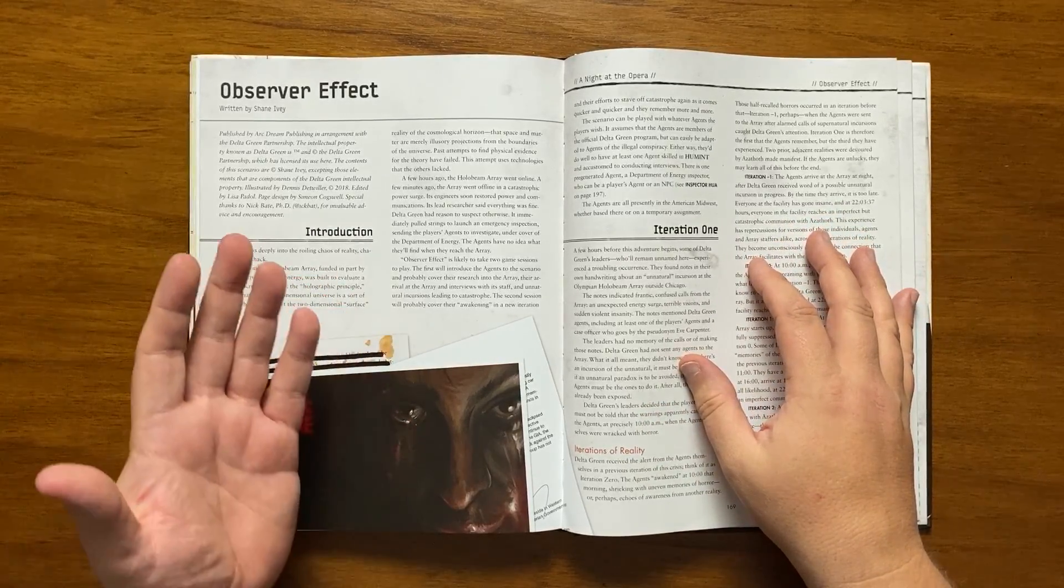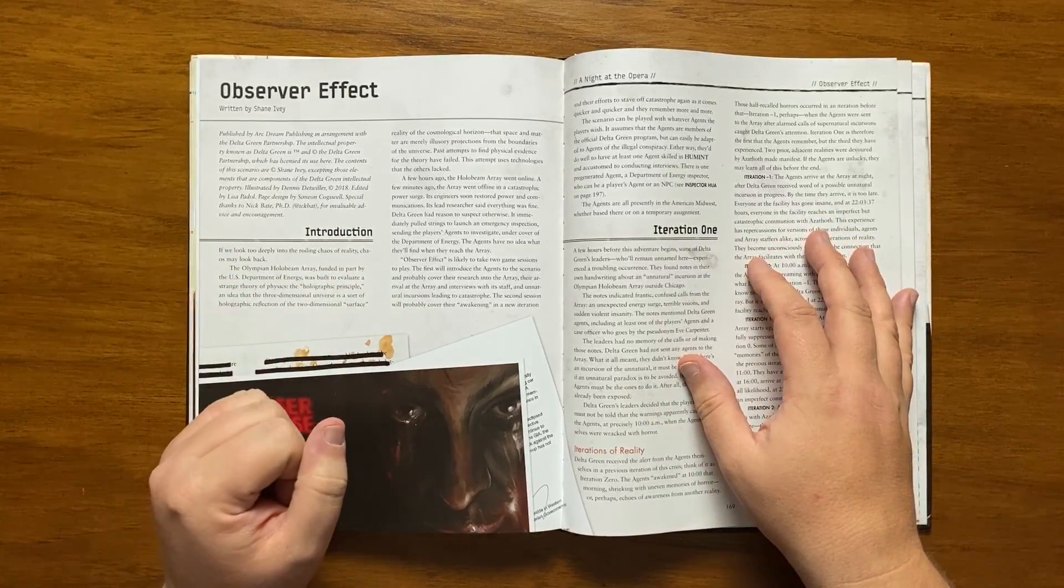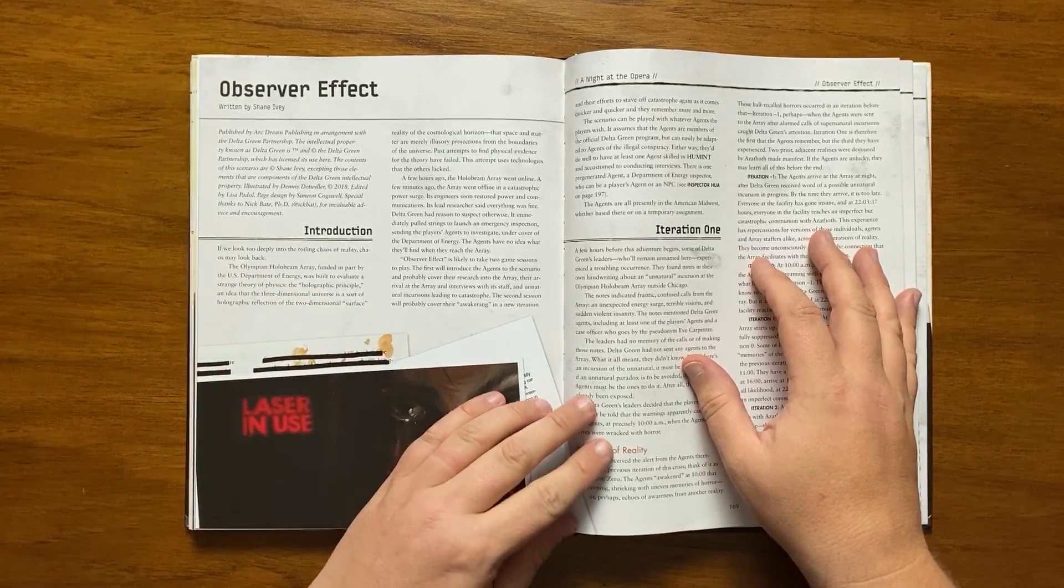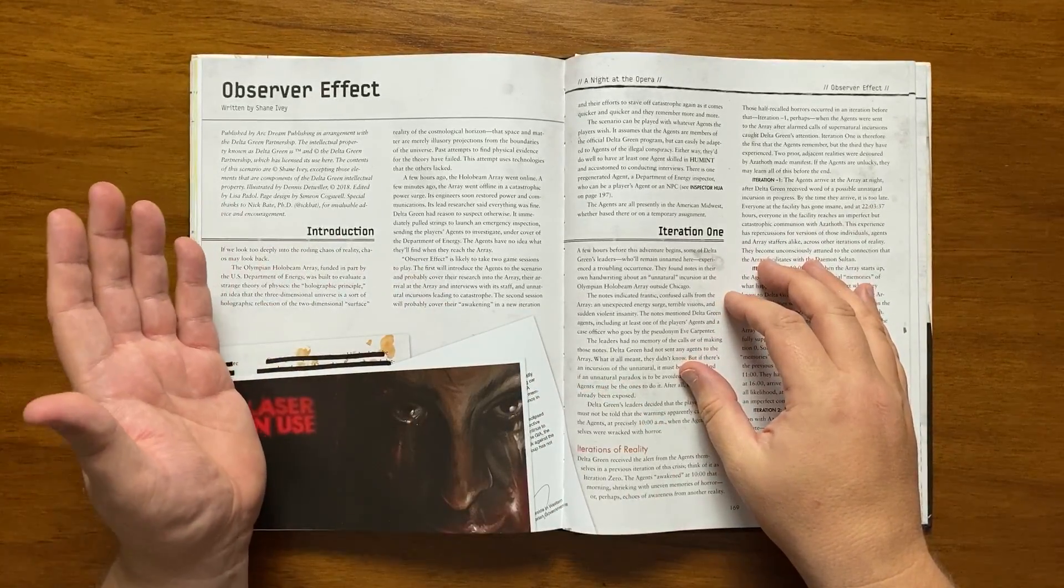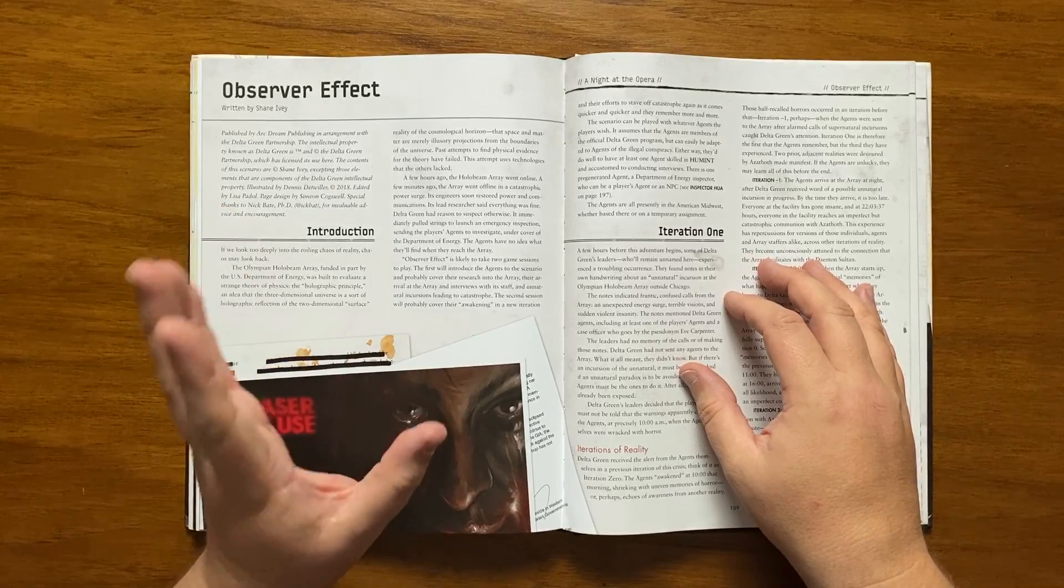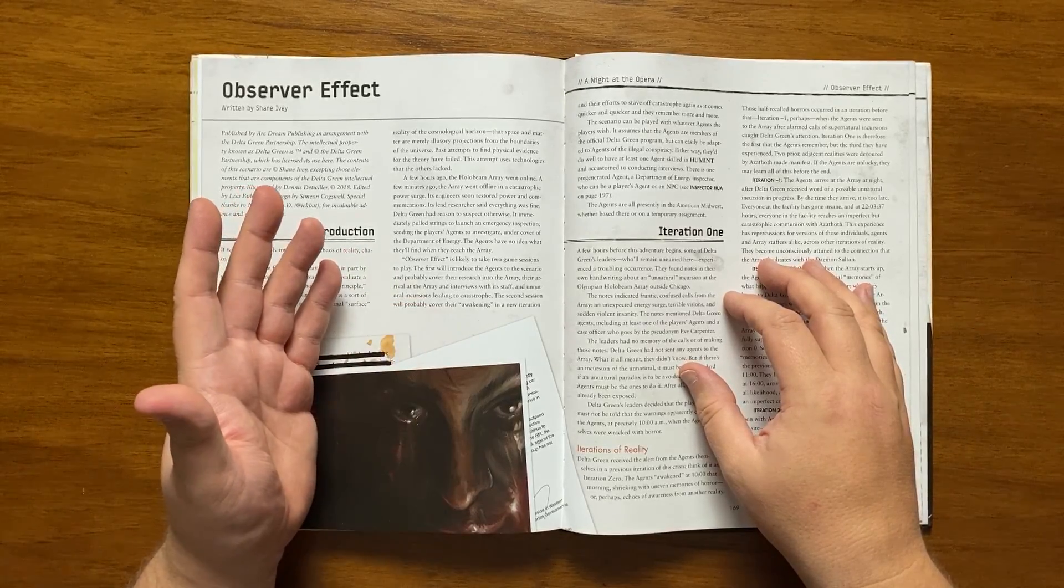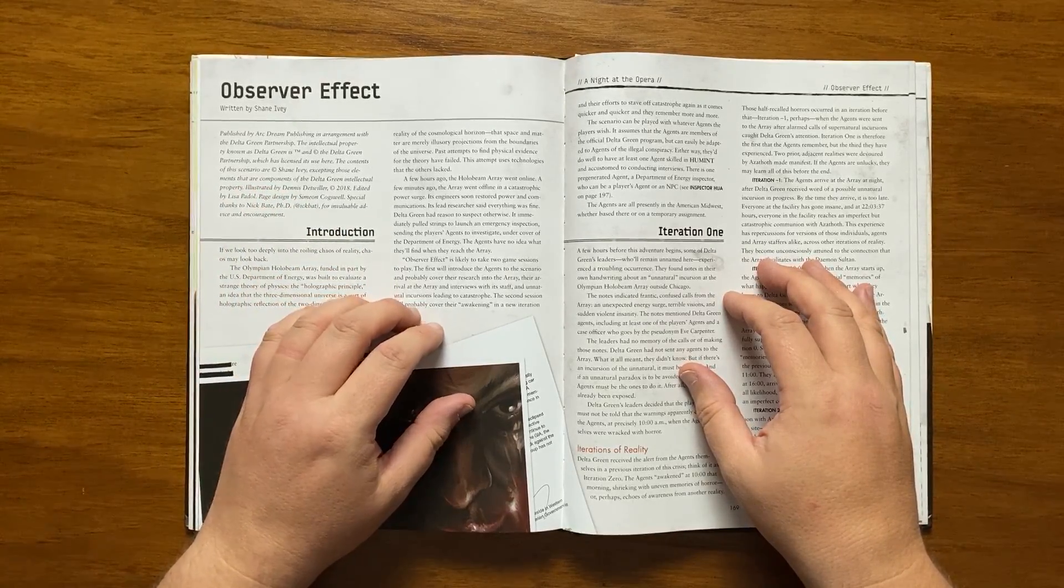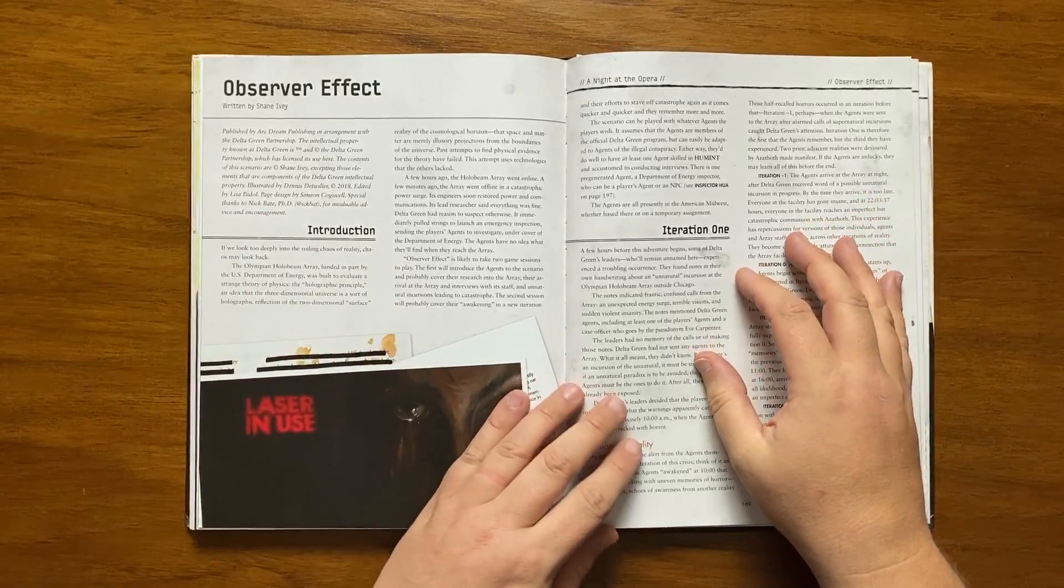Power was restored and everything was deemed fine, but not at Delta Green. They immediately pulled some strings and launched an emergency inspection with the players being sent to investigate, undercover as Department of Energy contacts. Nobody from the outside has any idea what has happened. We are advised that it should take two sessions to play through.